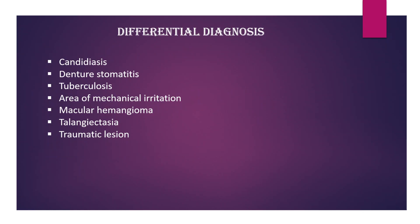Now let's learn about the differential diagnosis of erythroplakia. 1. Candidiasis: the lesion can be rubbed off and is commonly seen on the tongue. 2. Denture stomatitis: the site is usually the palate or any denture-bearing area. 3. Tuberculosis: tuberculous ulcers are present with rolled margins. 4. Histoplasmosis: more common in females and presents as a single ulcer. 5. Area of mechanical irritation: the cause can be identified.